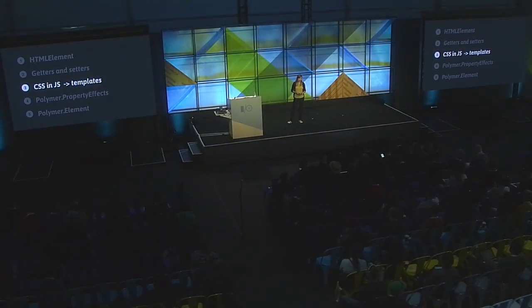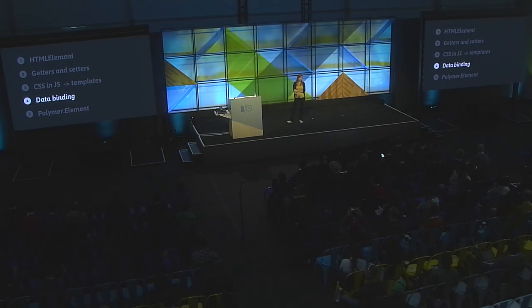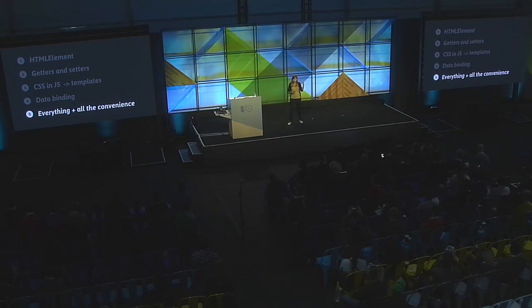Let me go through all five things again: HTML element is where you start. Property Accessors gives you getters and setters and keeps properties and attributes in sync. Template Stamp lets you use templates for stamping rather than awful CSS-in-JavaScript. Property Effects gives you data binding. And Polymer Element gives you the properties block, declarative observers and listeners, and everything you're used to from Polymer 1.